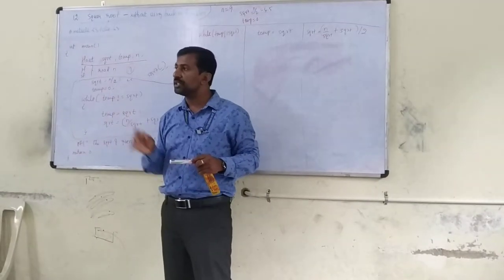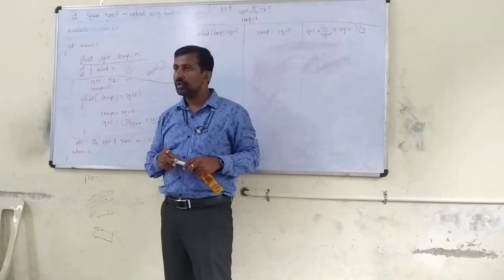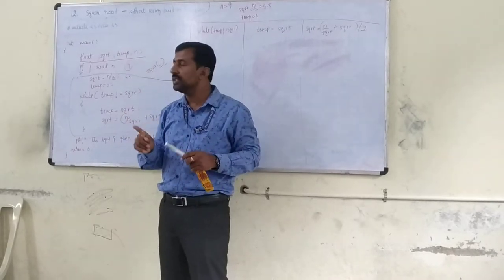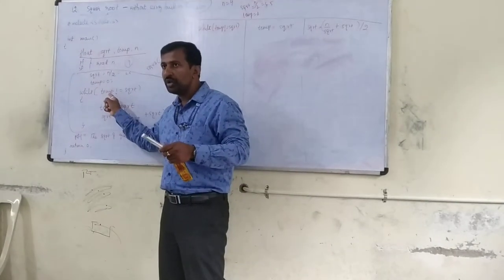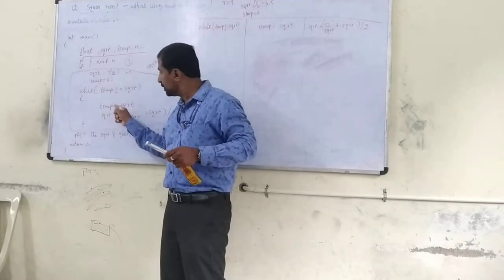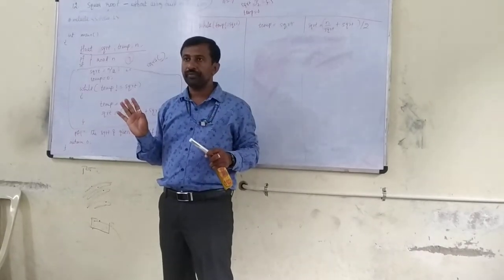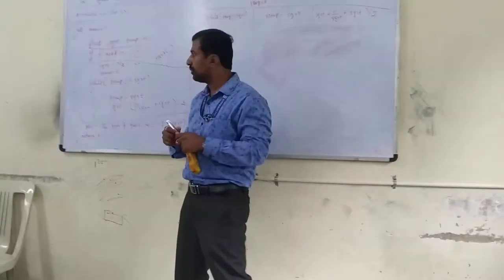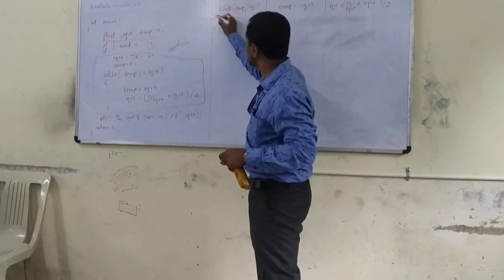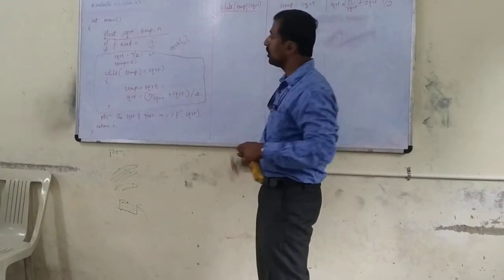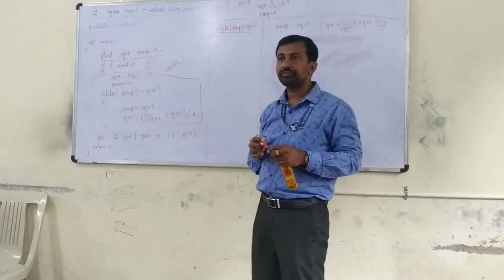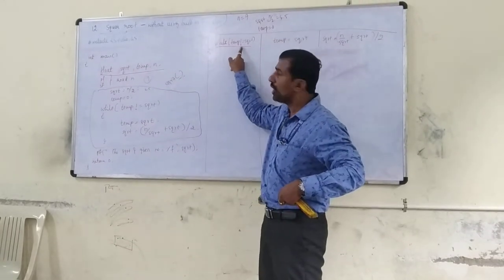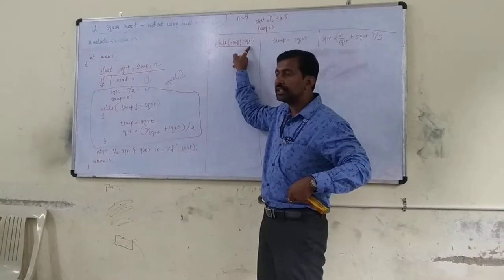Within the while loop, how many statements are there? Two statements. It means each time whenever the while loop condition is true, these two statements will be executed. First time, we check the while loop — whether it is true or not. What is the condition inside the while loop? temp not equal to sqrt. What is the value of temp? Zero. Whether zero is not equal to 4.5 — true or false? True.